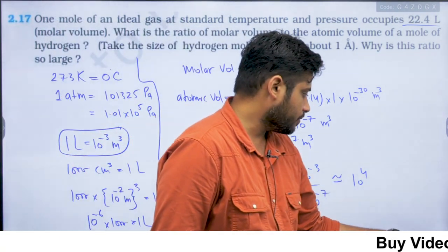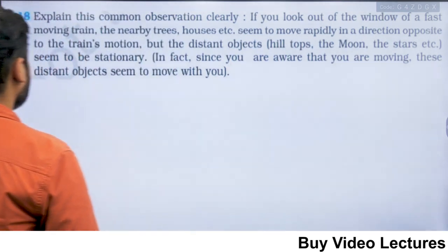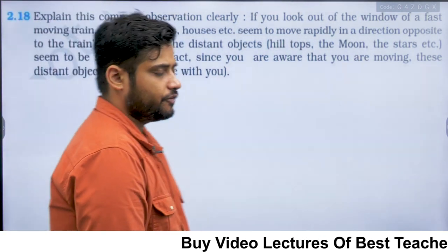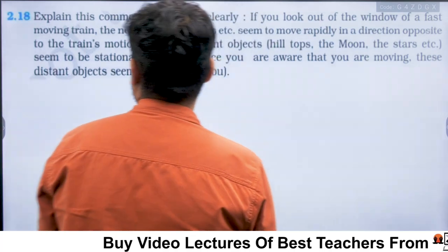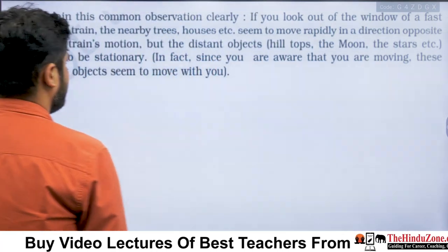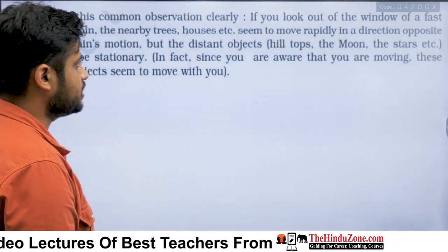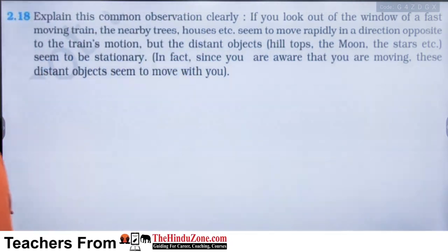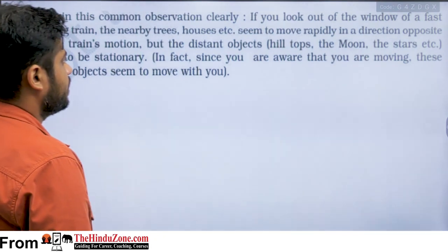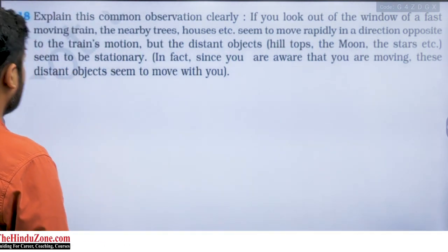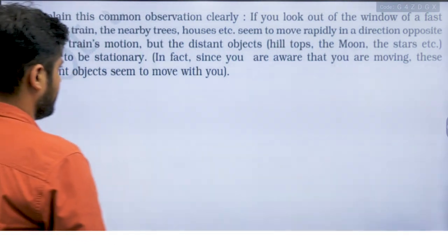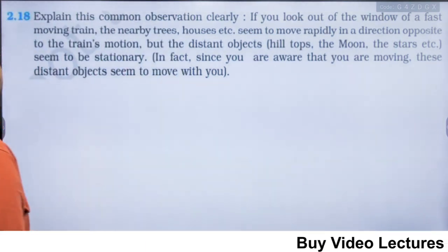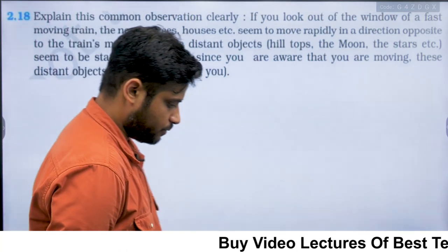The next question asks us to explain a common observation: if you look out of the window of a fast-moving train, nearby trees and houses seem to move rapidly in the opposite direction. But distant objects like hills, the moon, and stars seem to be stationary. In fact, since you know you are moving, distant objects seem to move with you.